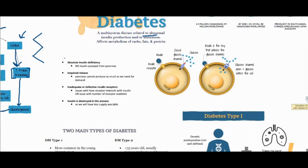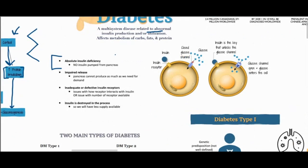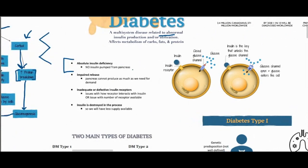You can actually have no insulin — an absolute insulin deficiency — meaning there's absolutely no insulin coming out of the pancreas; your body is not making any at all. This is usually related to diabetes type 1.